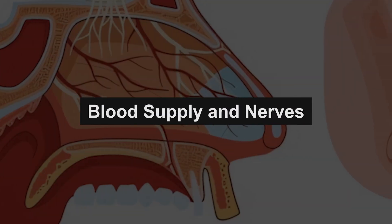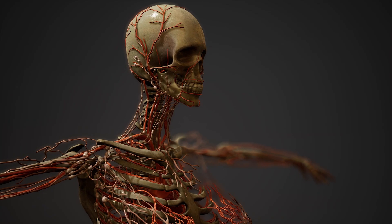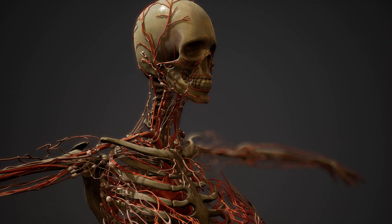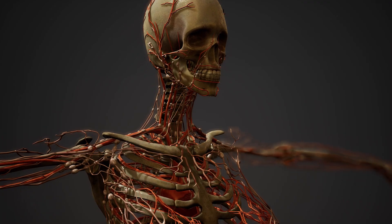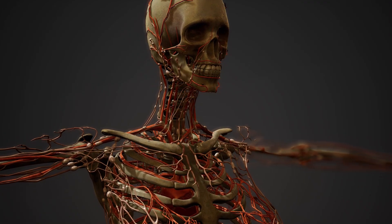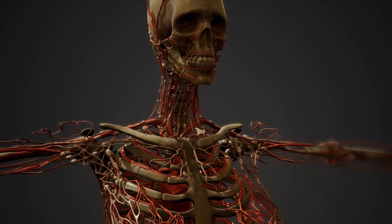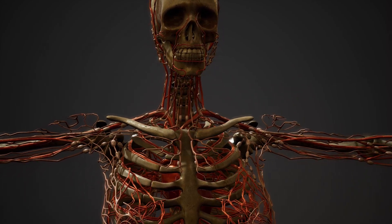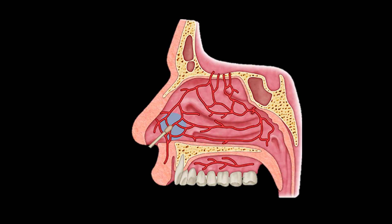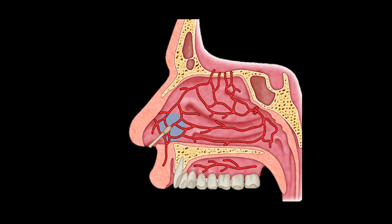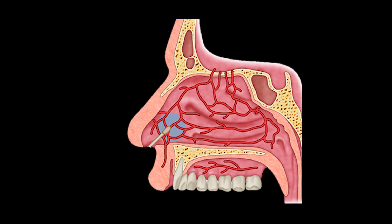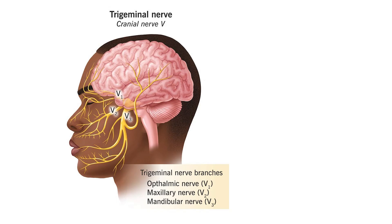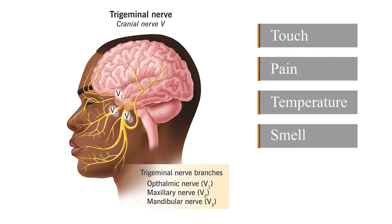The nose has a rich blood supply, which helps warm the air as it passes through. Several arteries supply blood to the nose, including the facial artery and branches of the internal and external carotid arteries. Because of this rich blood flow, the nose can bleed easily, especially in dry conditions or due to trauma. The nose is also connected to many nerves, which allow it to sense touch, pain, and temperature.